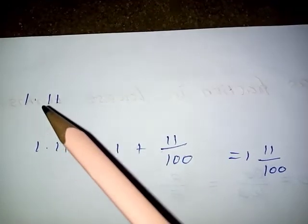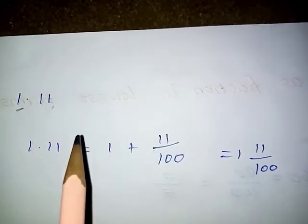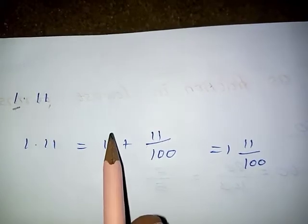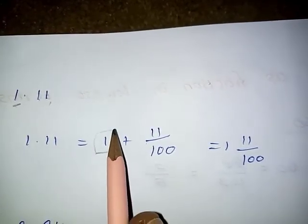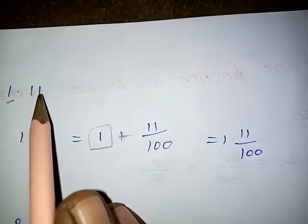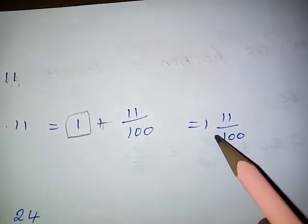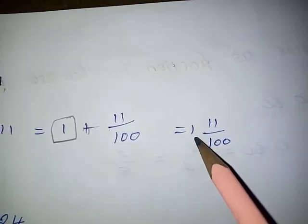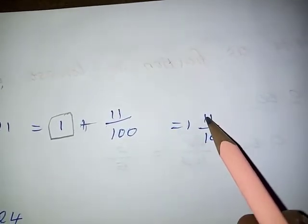Next: 1.11. In this sum, the integral part is 1 and the decimal part is in the 10th and 100th places. So we take 1.11 equal to: 1 (the integral part, taken as it is) plus the decimal part as usual. So the decimal part is 11 by 100, giving the fraction value of the given decimal as 1 and 11 by 100.